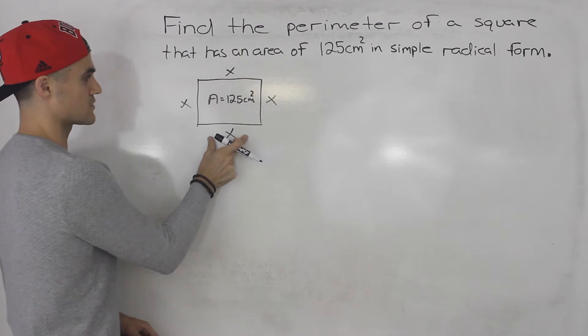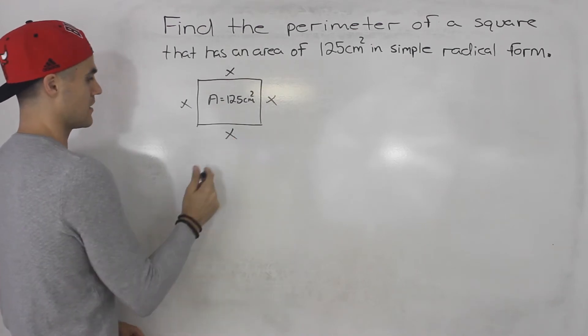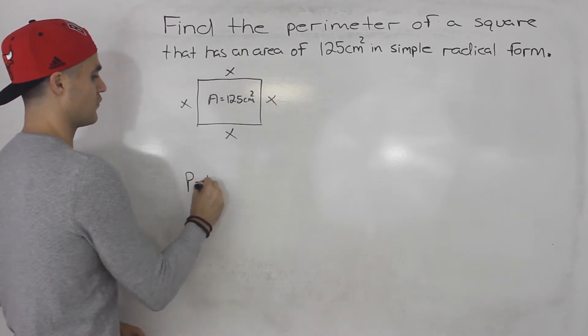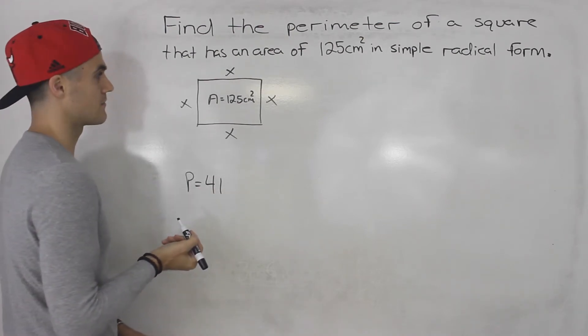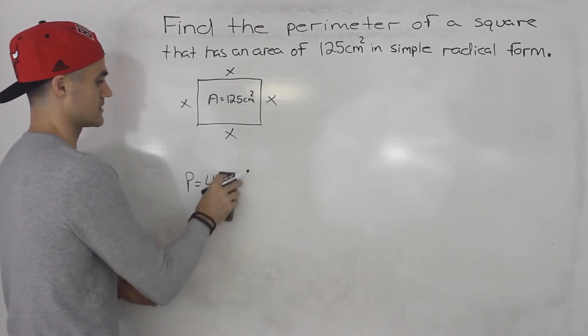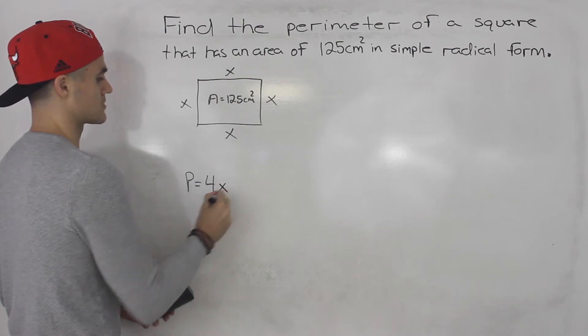So if we could find what the length of a square is, then basically its perimeter is going to be four times that length, or four times x in this case. Let's just keep the variables the same.